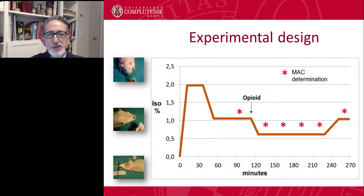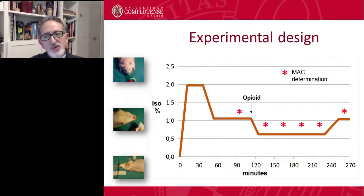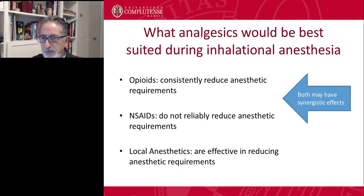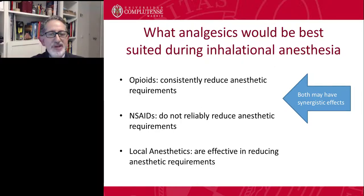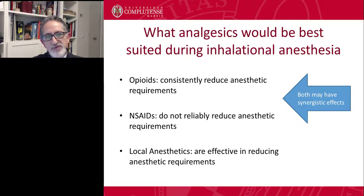Typically, we use studies with this experimental design: we provide isoflurane or sevoflurane to an animal like a rat, determine the minimal alveolar concentration for that individual, and then give the opioid. Once we give the opioid, we expect a reduction in the MAC, and by repeating the determination several times, we may also find the duration of the effect. Opioids consistently reduce anesthetic requirements. Non-steroidal anti-inflammatories do not reliably reduce — or only slightly reduce — anesthetic requirements. However, the combination of opiates together with NSAIDs may provide synergistic or additive effects, meaning the final reduction in anesthetic requirements is higher. Local anesthetics can also reduce anesthetic requirements and can be used as an infusion or given at the wound site.